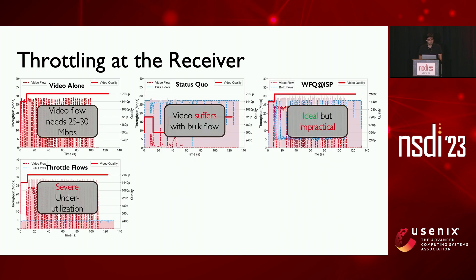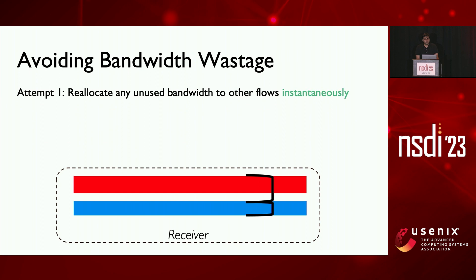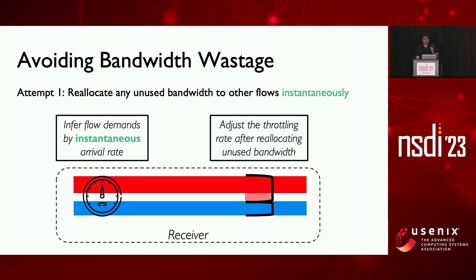So how do we fix this underutilization? What we actually want to enforce are maximum weighted fair share rates. What that means is that any time a flow's demand is less than its fair share, excess capacity is reallocated to other flows. To do so, we need to infer flow demands so that we can reallocate unused bandwidth. One option is to do instantaneous reallocation: we look at the instantaneous rate at which the flow is arriving at the receiver to infer flow demands, and then instantaneously reallocate unused capacity based on it.